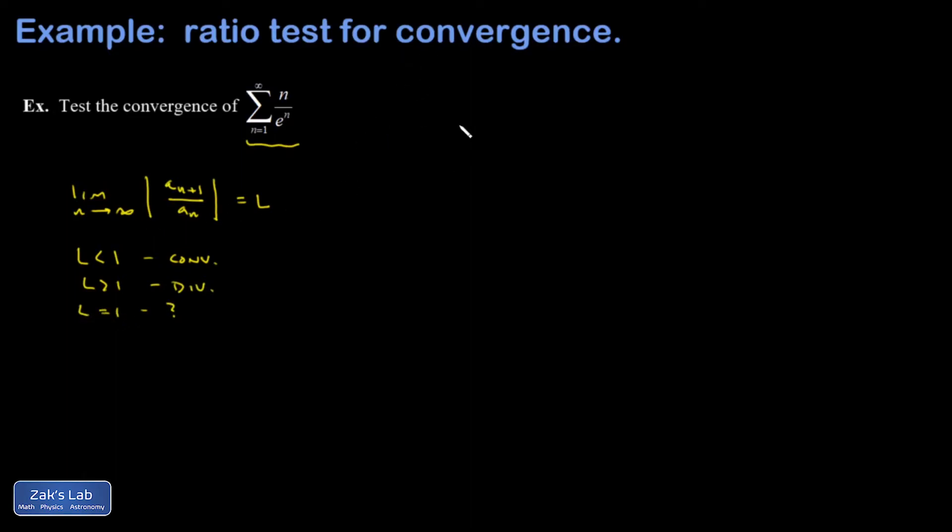So let's look at this ratio and take the limit. My n plus 1 term is going to be n plus 1 over e to the n plus 1. I then divide that by the nth term, which is the same as multiplying by its reciprocal, and then I take the large n limit. Notice the absolute value bars weren't necessary because all these terms are positive anyway.